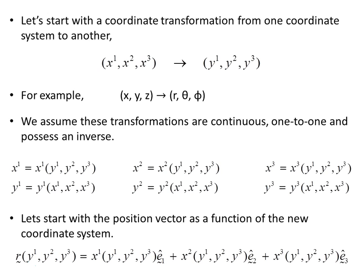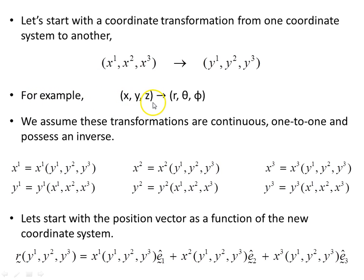Let's start with a coordinate transformation from one coordinate system to another — that is the x1, x2, x3 coordinates to the y1, y2, y3 coordinates. An example of this would be Cartesian coordinates x, y, z transforming to spherical polar coordinates r, theta, phi. We assume these transformations are continuous, one to one, and possess an inverse.